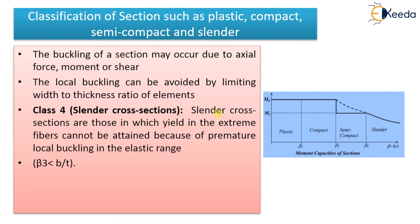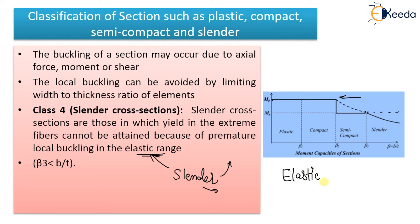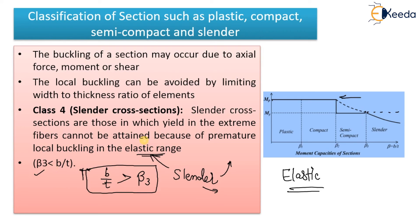Class 4 is the slender cross section. Slender cross sections are those in which yielding in the extreme fibers cannot be attained because of premature local buckling in the elastic range. This means a slender section will not go into the plastic zone — it will fail in the elastic zone itself, below the yield stress. In beta terms, the b/t ratio will be greater than beta 3.